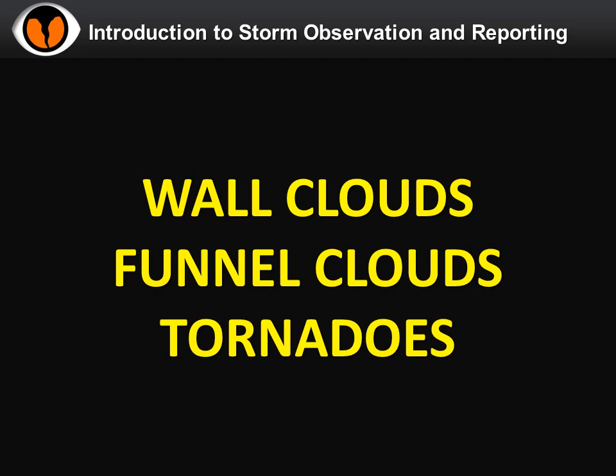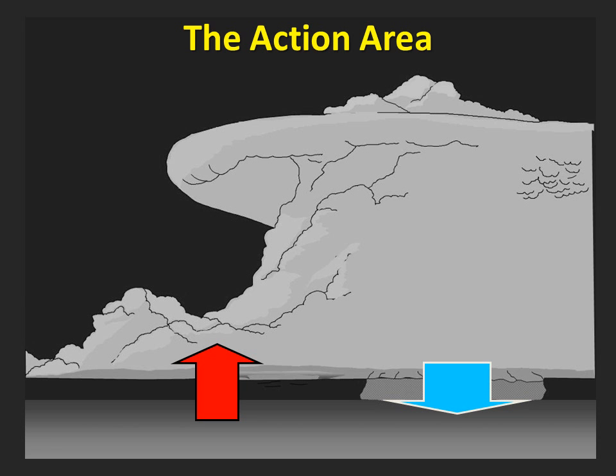Tornadoes and the cloud features that come before them are the most important things for spotters to identify. The chances you'll have to deal with any of these is very low, but it's important to know what you're looking for. In this section, we're focusing on supercell thunderstorms and that part of the storm where tornadoes are most likely to develop.